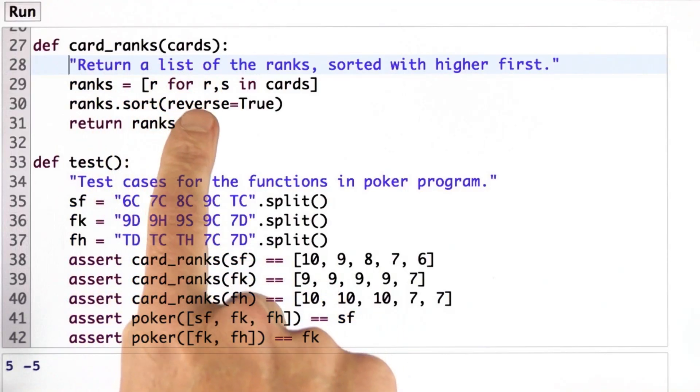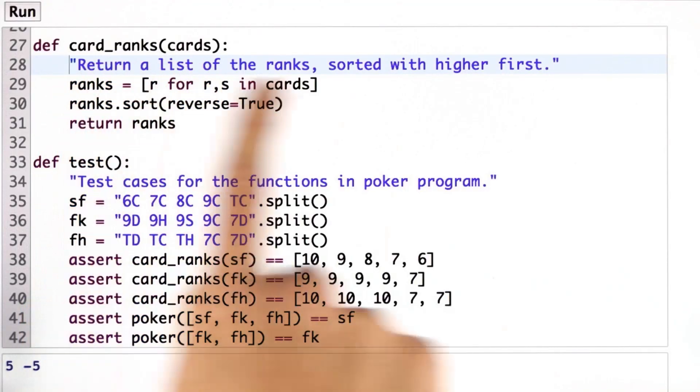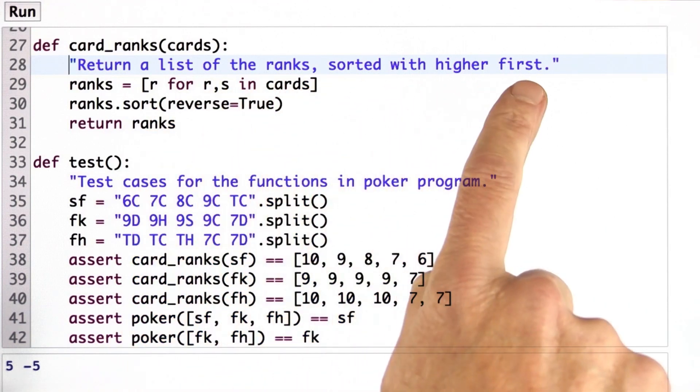Here's a definition of cardRanks that's almost right. We say what cardRanks does - it returns a list of the ranks sorted with higher first.